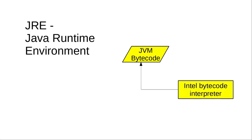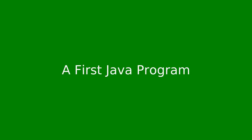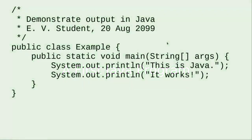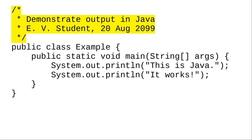Once you have a working program, anyone with the Java runtime environment, which is the bytecode interpreter, can run it. Here's a typical first program, which we'll go through in detail. At several points, we'll be telling you to take our word for things rather than go too deep into detail. The lines beginning with slash-star and ending with star-slash are a comment. You use them to let other humans know what your program does. Java ignores your comments — they're for people, not computers.